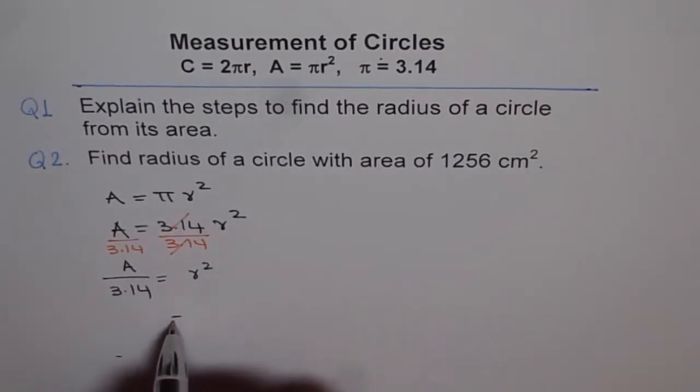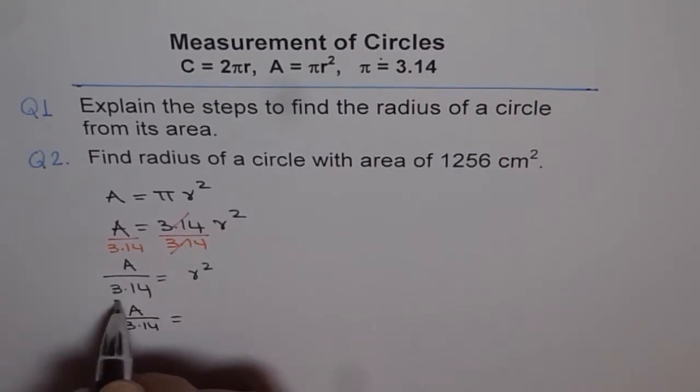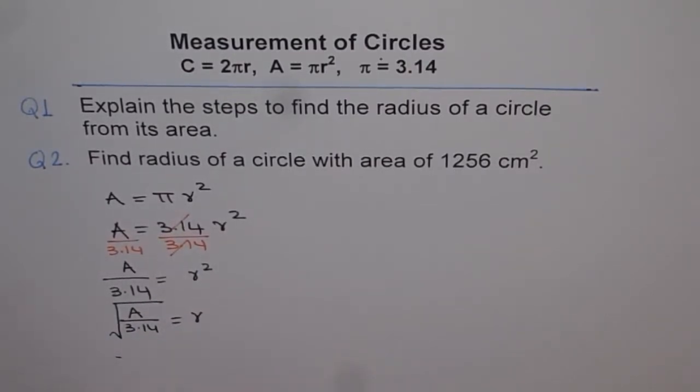Now to find the radius we need to square root it. So we will square root area divided by 3.14 to get the value of r. So that is how we are going to find the radius.